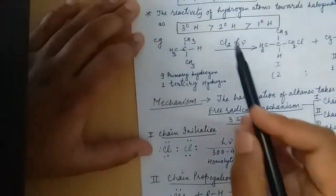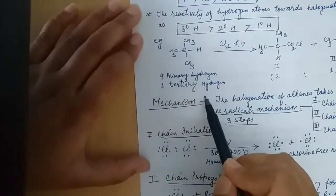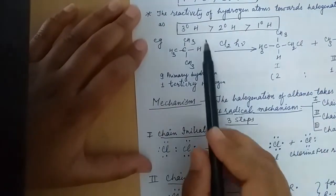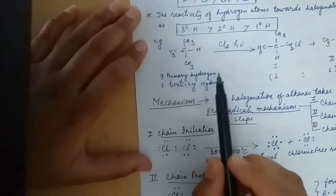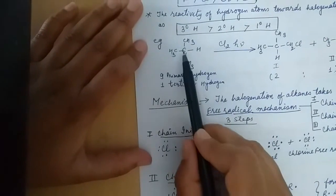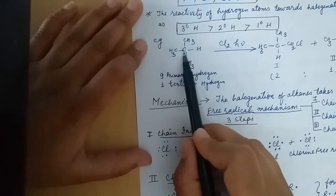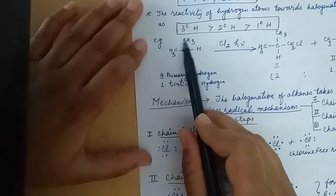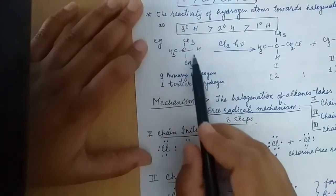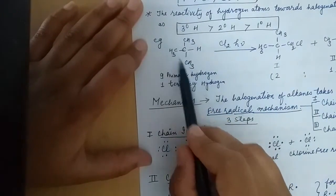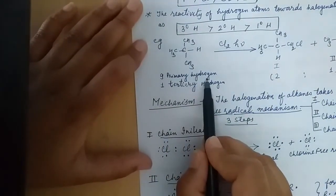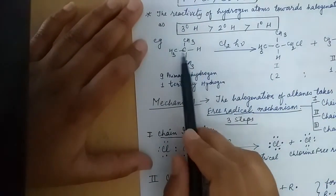Now, taking the simplest example here, we have a tertiary compound. The central carbon has 1, 2, and 3 positions around it. We can see positions 1, 2, and 3, and there are 9 primary hydrogens present here, and 1 tertiary hydrogen on the central carbon.